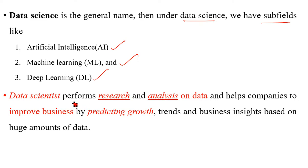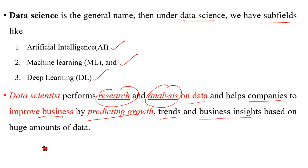A data scientist performs research and analysis on data and helps companies improve their business, predicting growth, trends, and business insights based on huge amounts of data. Companies like Amazon and Flipkart use data to develop models and predict their growth and trends. For example, if you search for a mobile on Amazon, the model captures your interests and suggests items based on what you are looking for.